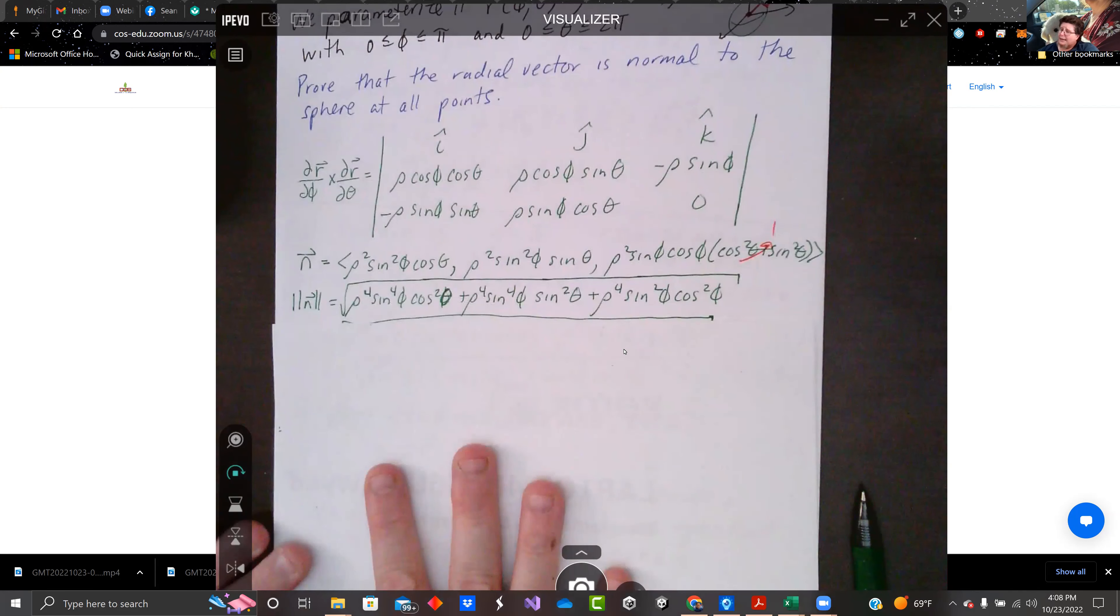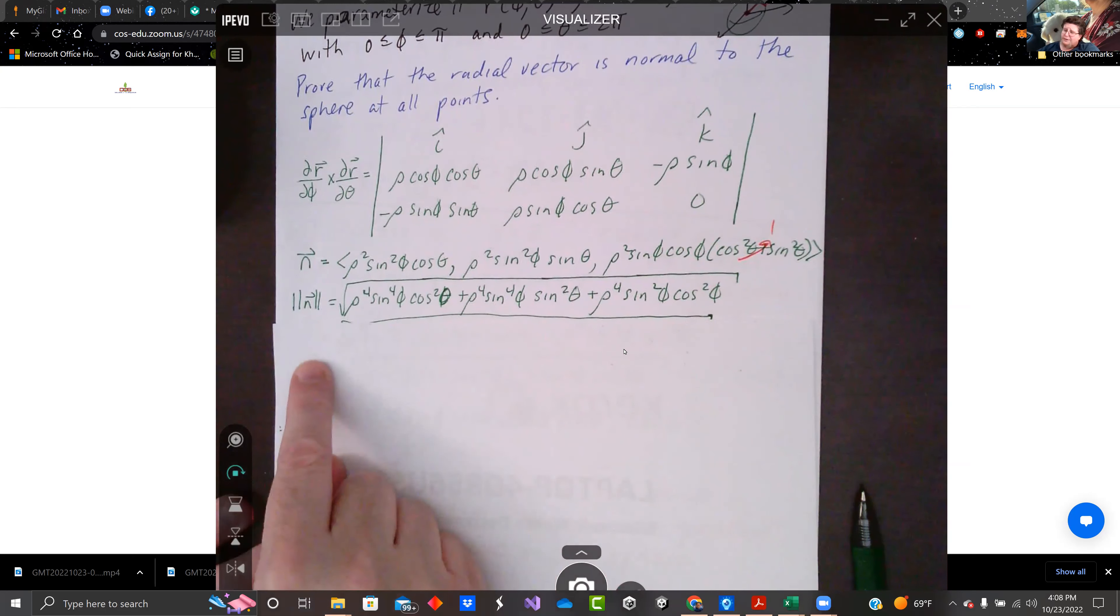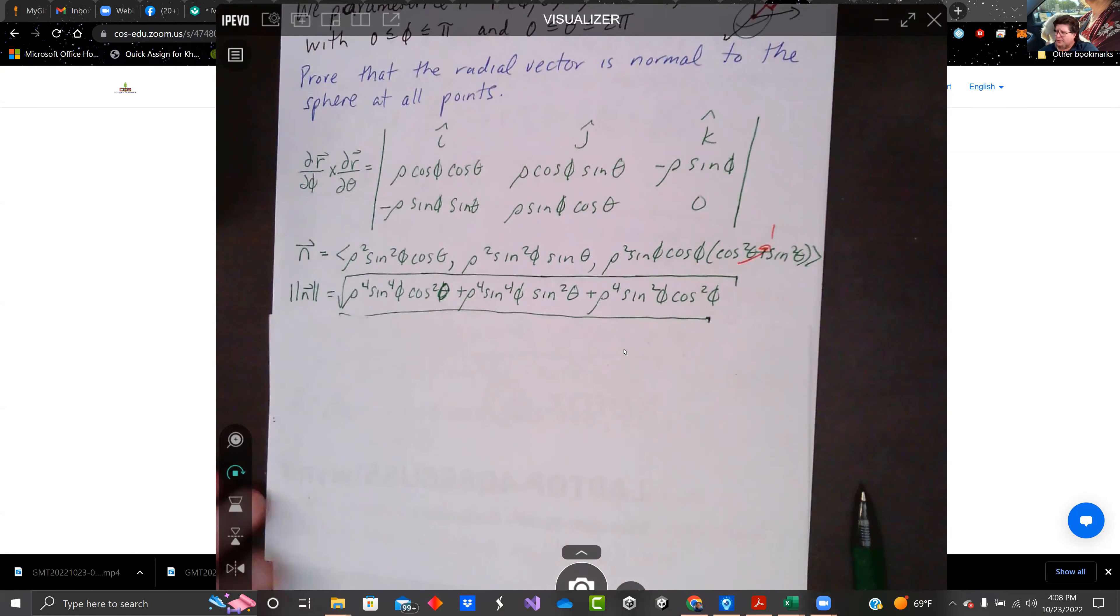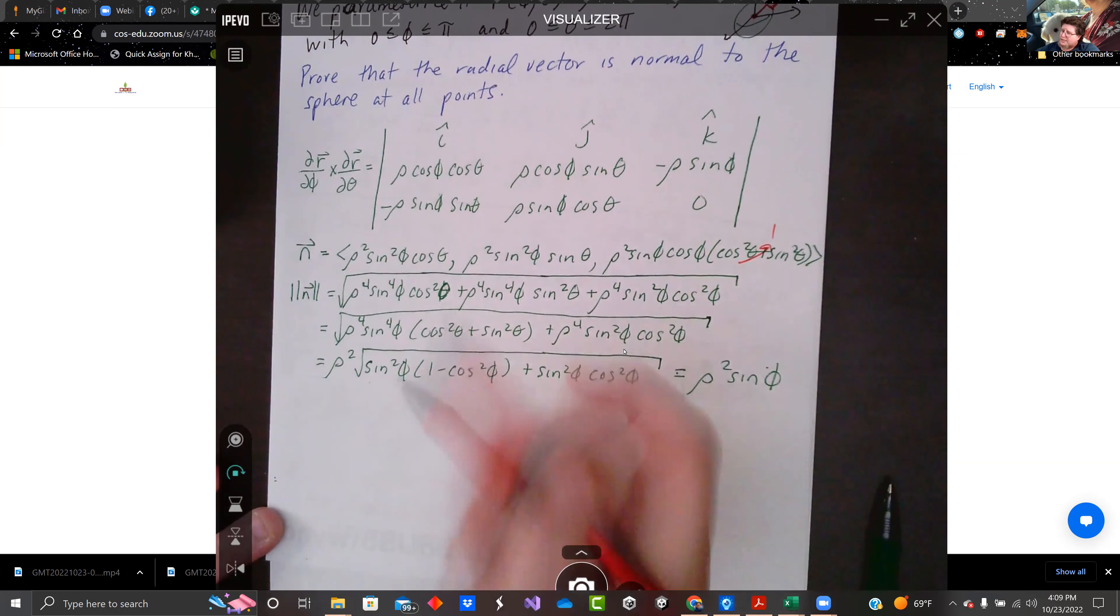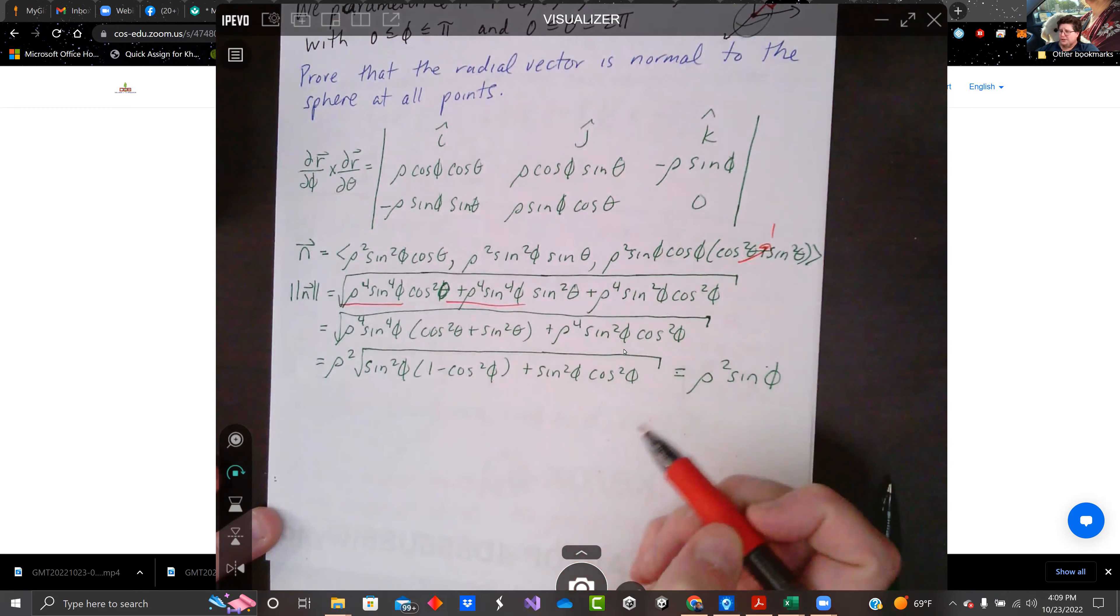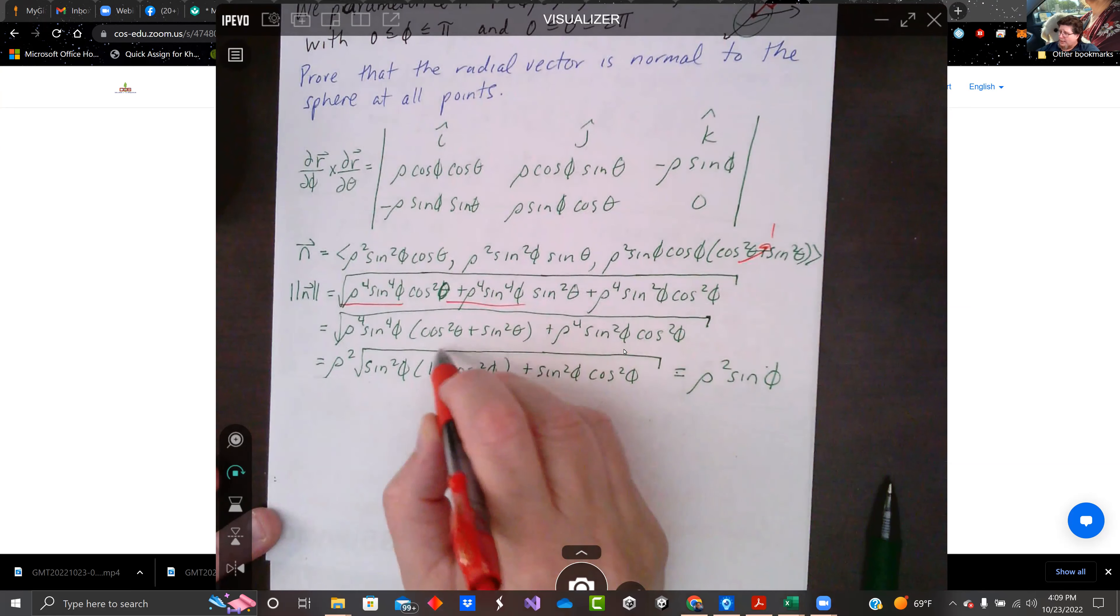So if I take the norm of that, the derivative or the square root of the squares, sum of the squares. So I squared each one of these terms and added it up. We do a little bit of factoring to reduce where we can.